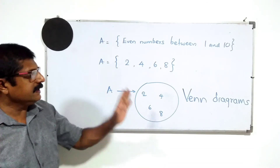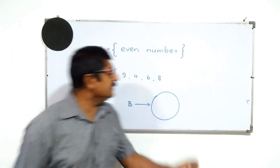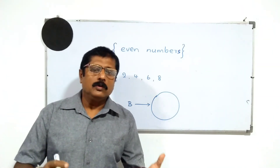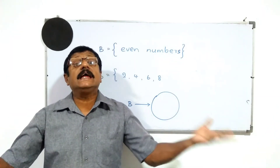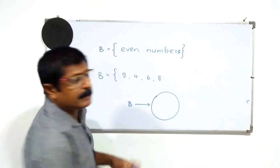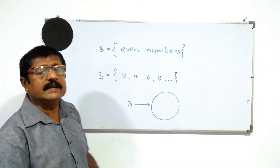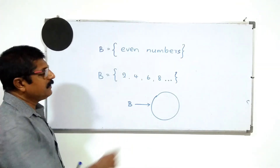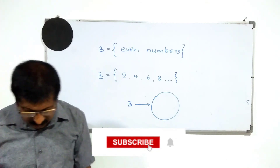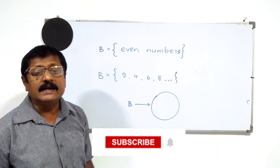Now there are three methods of writing a set. But here comes another problem. Consider B equals even numbers: 2, 4, 6, 8, 10, 12, 14 — it does not end. So how can we close the bracket? We can put three dots, called an ellipsis, to show that it continues in the same manner. But remember: if you use three dots, the order must be maintained, otherwise the reader can't understand. Also, you cannot use a Venn diagram for these non-ending sets.